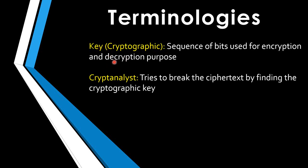The last term is the cryptanalyst — a person who tries to obtain the cryptographic key in order to break the ciphertext. The key point in encryption and decryption is the cryptographic key, not the algorithm itself. The strength of the algorithm depends on the security of the cryptographic keys. So a cryptanalyst tries to obtain the key rather than directly breaking the ciphertext — once they find the key, they can decrypt all communication between the sender and receiver.